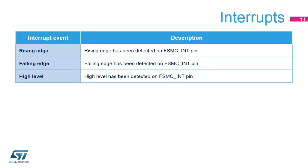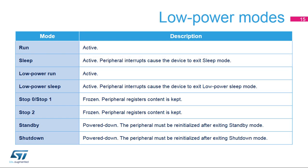The NAND controller offers three interrupt sources — rising edge, falling edge, and high-level detection on the FSMC INT pin — when connected to the ready/busy signal from NAND Flash memory. The FSMC is active in run, sleep, low-power run, and low-power sleep modes, and an FSMC interrupt can cause the device to exit sleep or low-power sleep mode. In stop 0, stop 1, or stop 2 mode, the FSMC is frozen and the content of its registers is kept. In standby or shutdown mode, the FSMC is powered down and must be re-initialized afterwards.